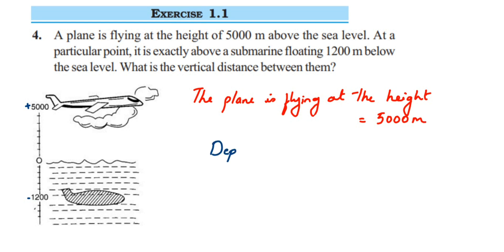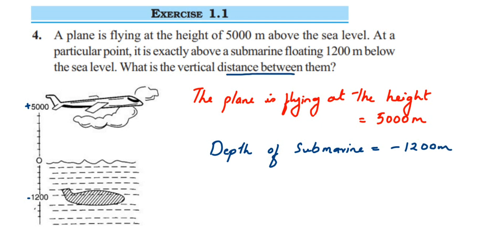The depth of the submarine will be equal to minus 1200 meters. Now, what they're asking is the vertical distance between them. When finding a distance between two things we have to subtract, so I'm going to subtract these two values.